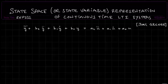What I have here is a third order differential equation in y. These are functions of time. We have y triple dot plus some coefficient b2, y double dot plus b1, y dot plus b0, y is equal to the driving function terms: a2 u double dot plus a1 u dot plus a0 u.